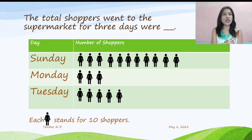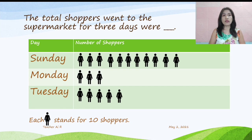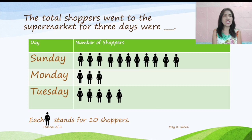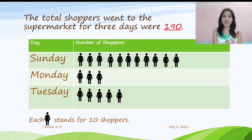Next question: the total shoppers who went to the supermarket for three days. We are going to count all of the pictures given here using skip counting by 10. So, we have: 10, 20, 30, 40, 50, 60, 70, 80, 90, 100, 110, 120, 130, 140, 150, 160, 170, 180, 190. The total shoppers who went to the supermarket for three days — yes, you are correct — it's 190 shoppers. So, that's the answer.